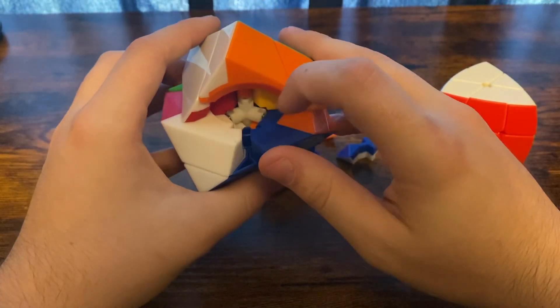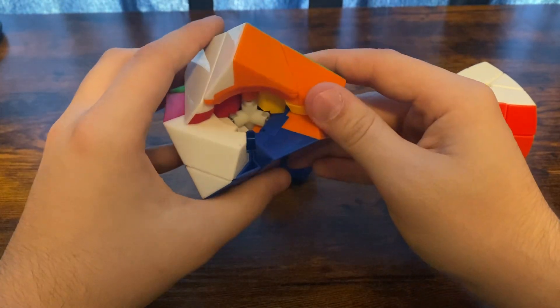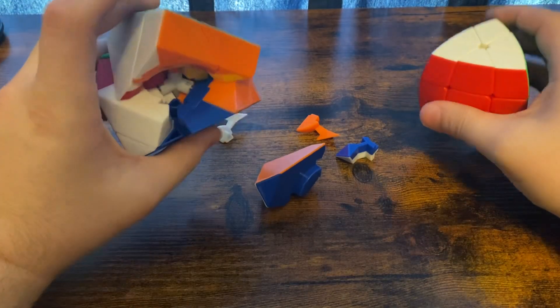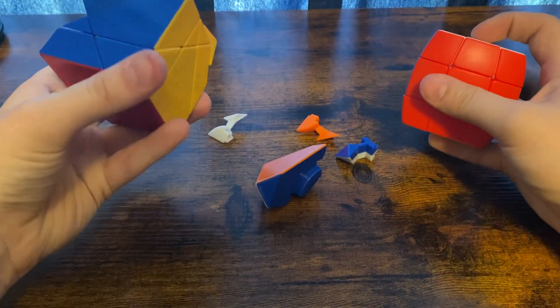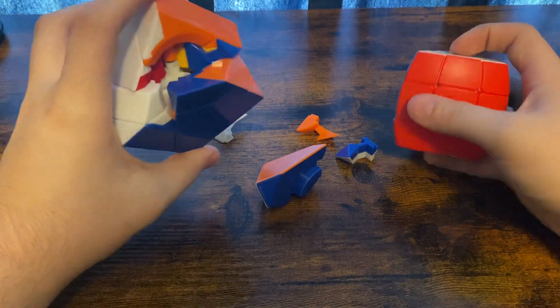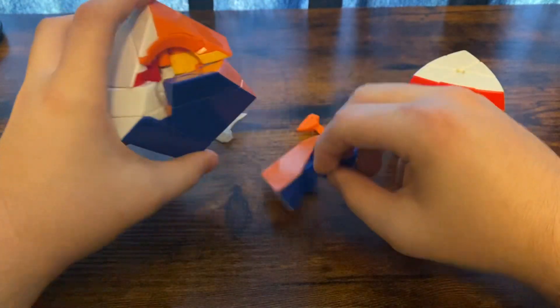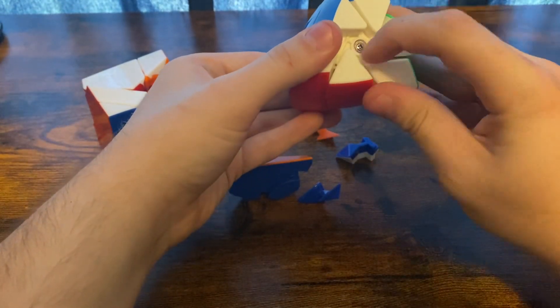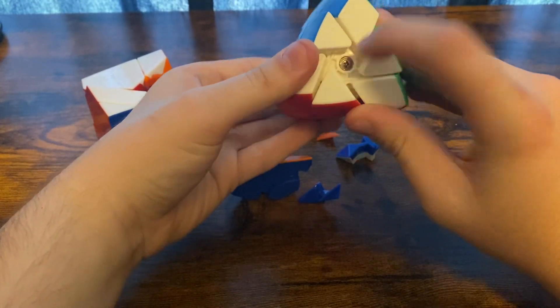Inside we have a five axis core. You've got two three-sided corners which act as centers, and those correspond to these hidden centers on this puzzle.